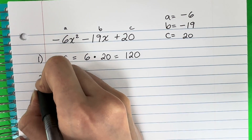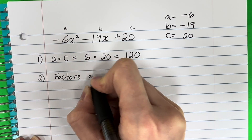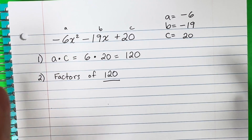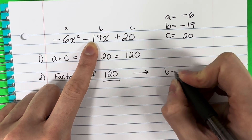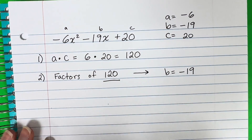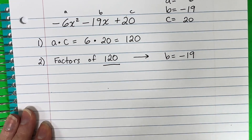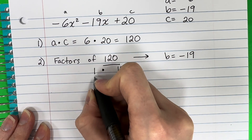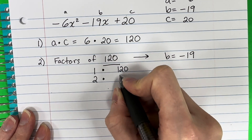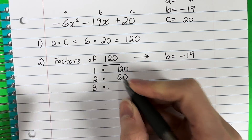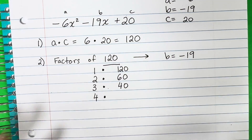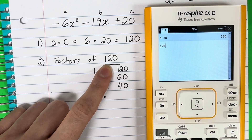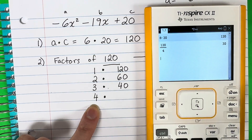Now you need to find the factors of 120. Those factors — you're going to add or subtract them to get the value of B, which in this case is negative 19. Start from 1 and list all factor pairs: 1 times 120 is 120. 2 times 60. 3 times 40. 4 times 30 — if you don't know, just do 120 divided by 4 to get 30. 5 times 24 — do 120 divided by 5 to get 24.